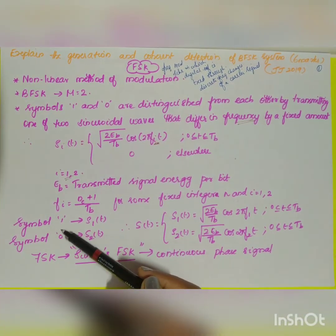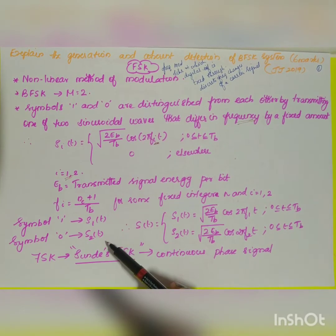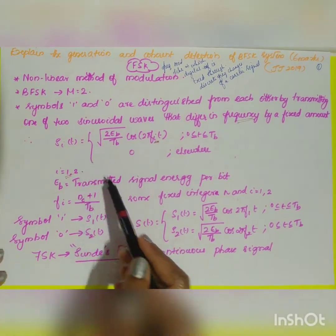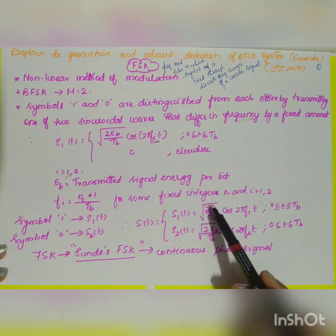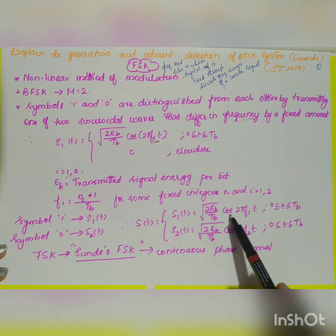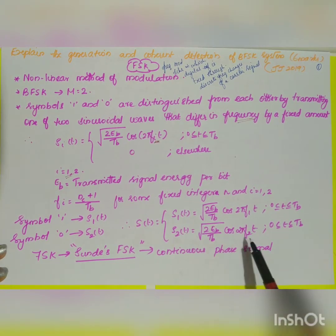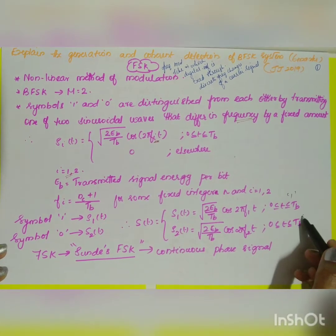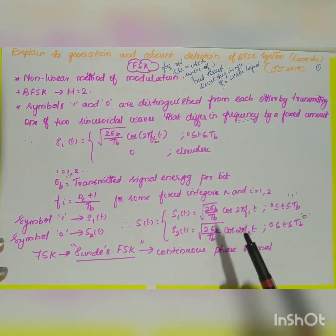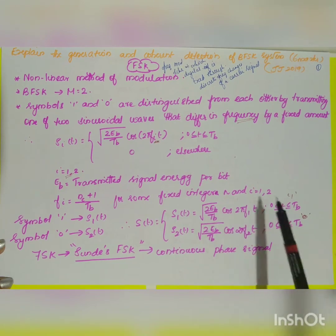Symbol 1 is taken as s_1(t) and symbol 0 is taken as s_2(t). So s(t) can be written as: s_1(t) = √(2E_b/T_b) · cos(2πf_1·t) for symbol 1, and s_2(t) = √(2E_b/T_b) · cos(2πf_2·t) for symbol 0. This is also a continuous phase signal — only the frequency is varied.